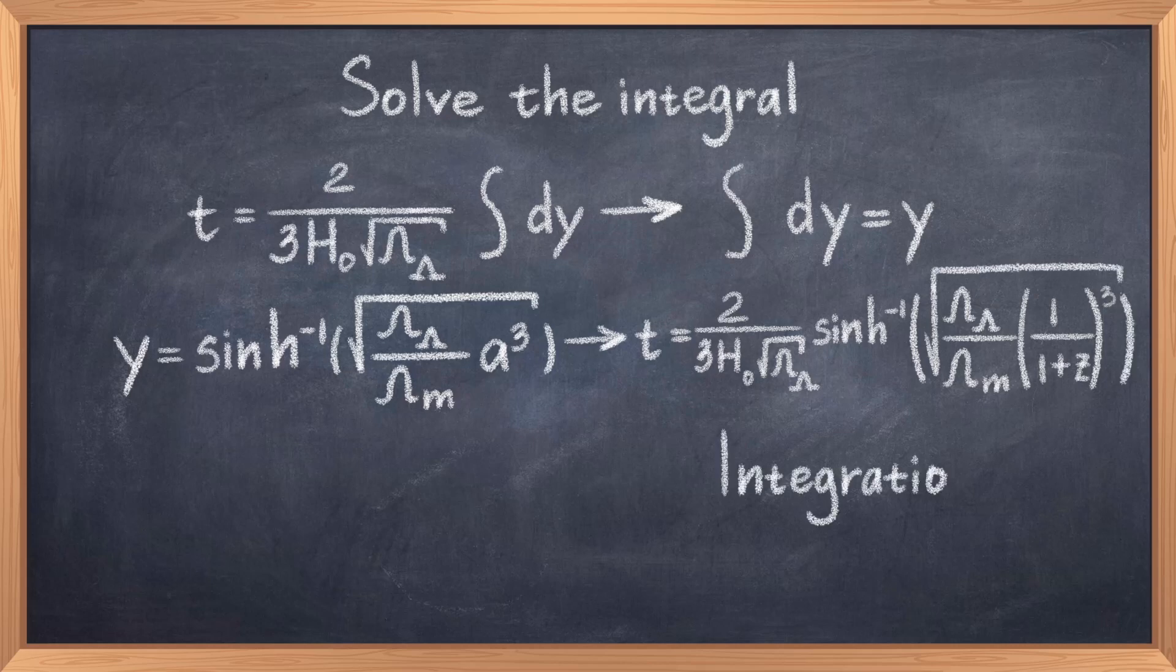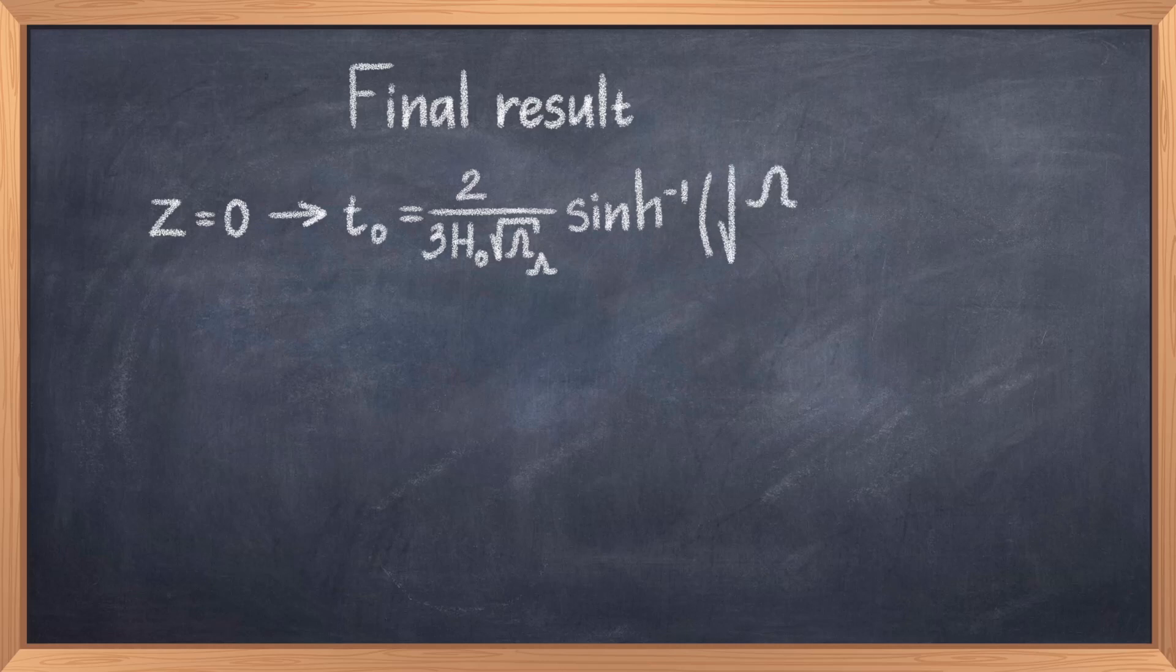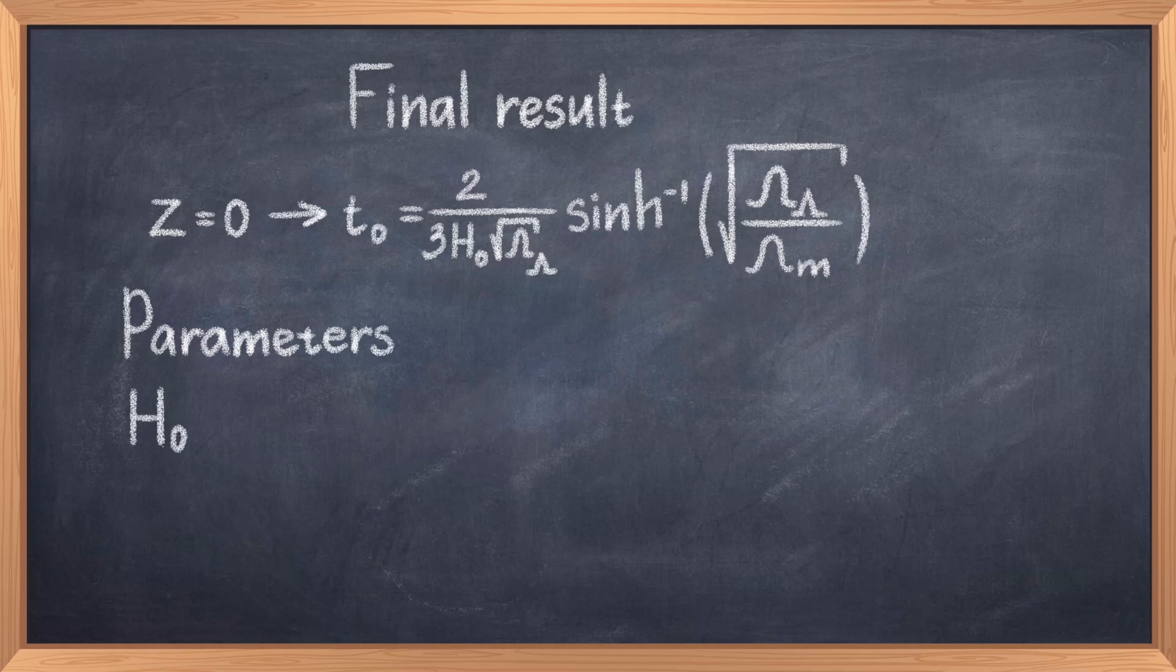Now we've derived the equation for the age of the universe from scratch using clever algebra, substitution, and calculus. Having carefully derived this equation, we just need to plug in the relevant values. To calculate the current age, we must set the redshift to z = 0, as this is the current redshift. This simplifies the equation to: t₀ = (2/3H₀√Ω_λ) arcsinh(√(Ω_λ/Ω_m)), which is our result.